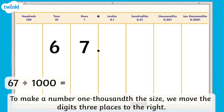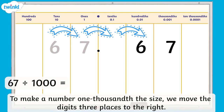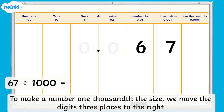Let's use the number 67. The 6 moves three places into the hundredths column, and the 7 moves into the thousandths column. We can show that there is no value in the ones or the tenths column by using zero as a placeholder. So 67 divided by 1,000 equals 0.067.